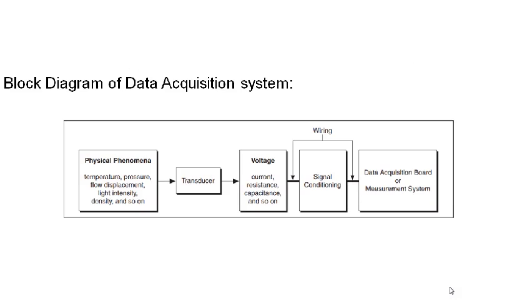This is a typical block diagram of a data acquisition system. The physical phenomenon block represents the actual physical parameter to be measured. A transducer converts this physical parameter to an electrical signal. The electrical signal is fed through signal conditioning to a measurement system, which consists of isolation, amplification, linearization, and filtering.